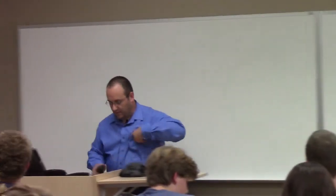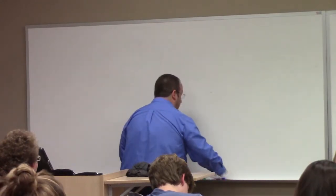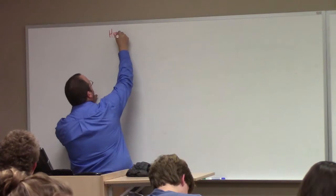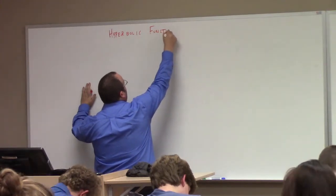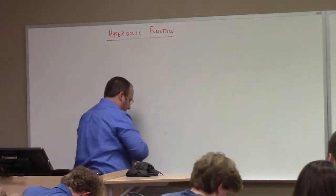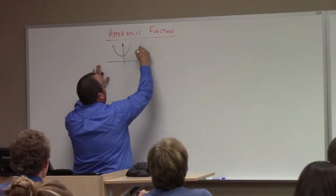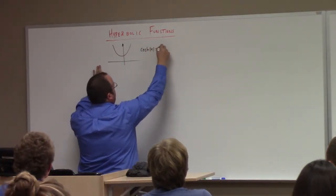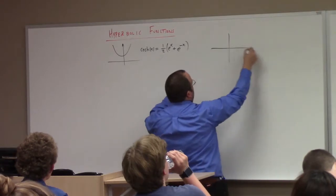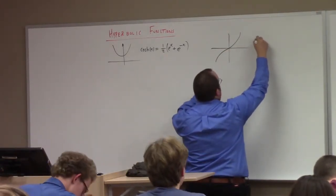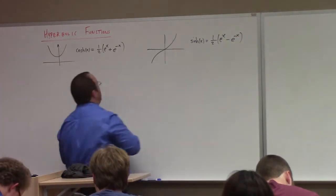So let's continue talking about hyperbolic functions. What did we learn last time? Basically, we learned that we can talk about cosh of x, which is one-half e to the x plus e to the minus x. And we also had sinh — sinh of x was one-half e to the x minus e to the minus x. So these are hyperbolic sine, hyperbolic cosine.